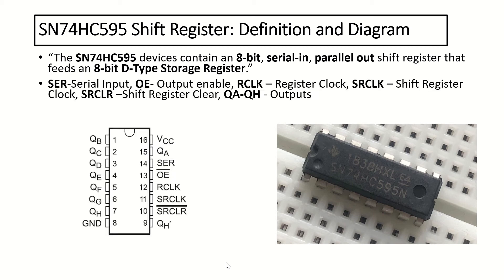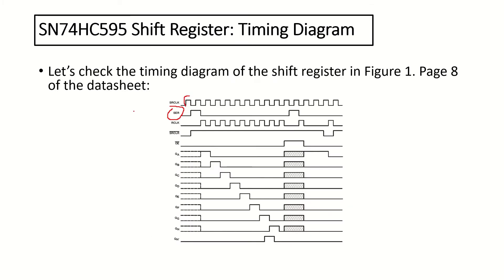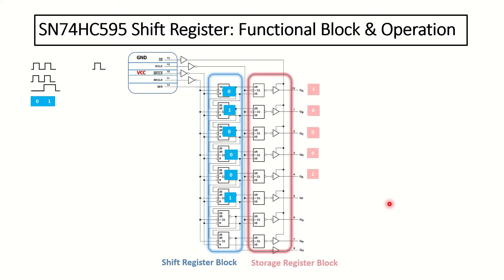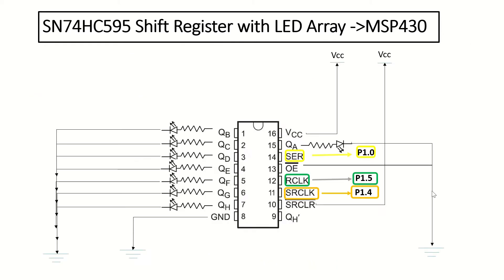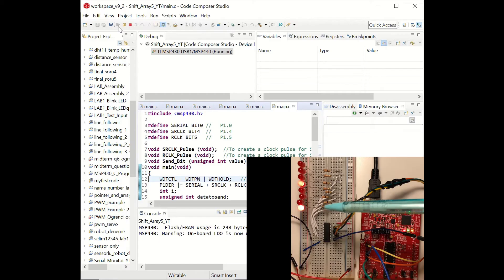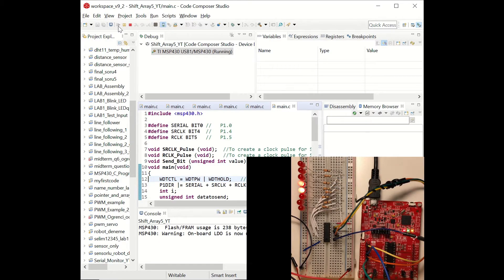Hello everyone. In this video we'll work with a serial in parallel shift register. We'll see the technical details and working principle of the device, and then with the circuit that we've built, we are going to connect it to the MSP430 microcontroller. And by writing C code, we are going to do a few applications.